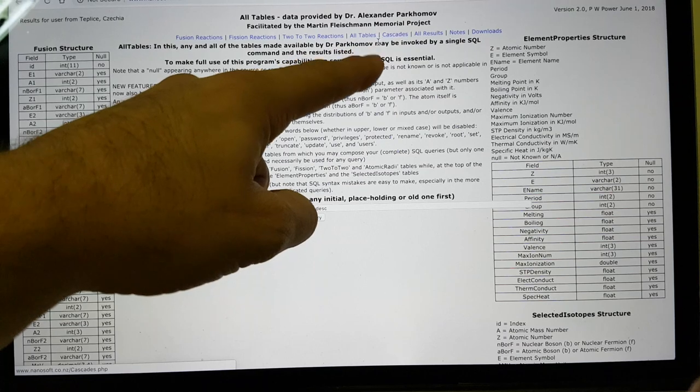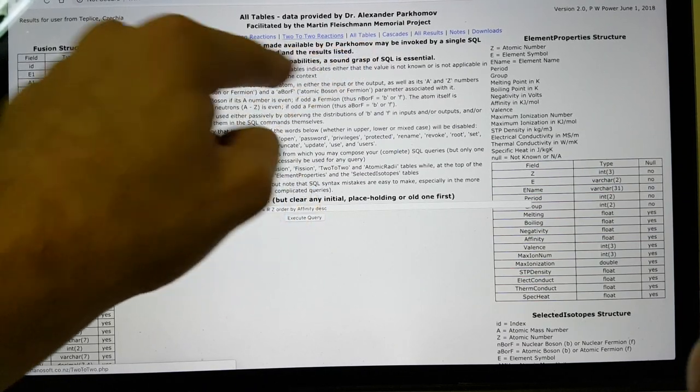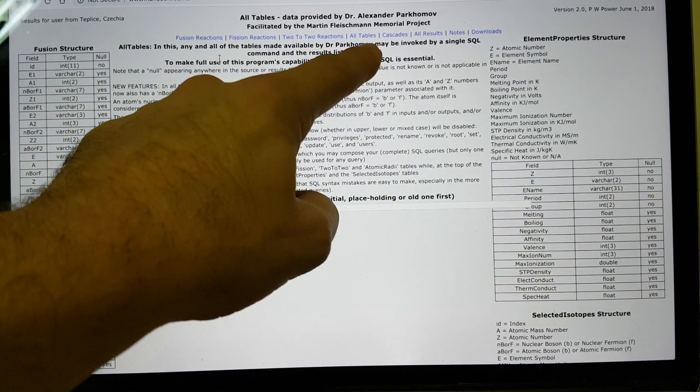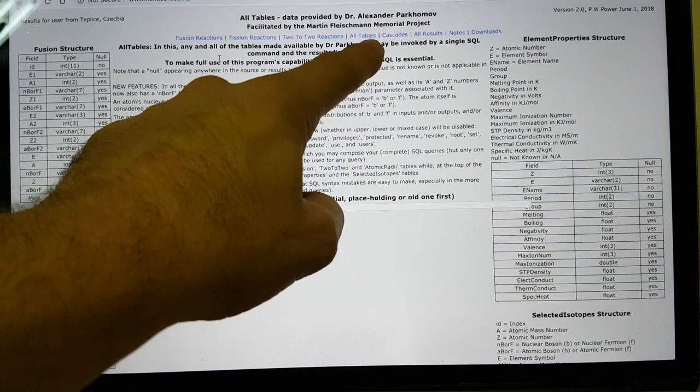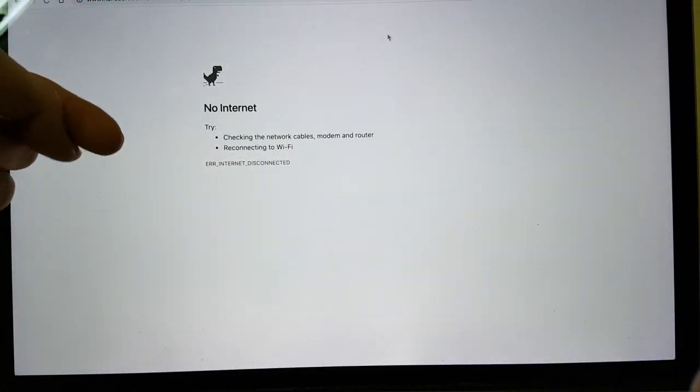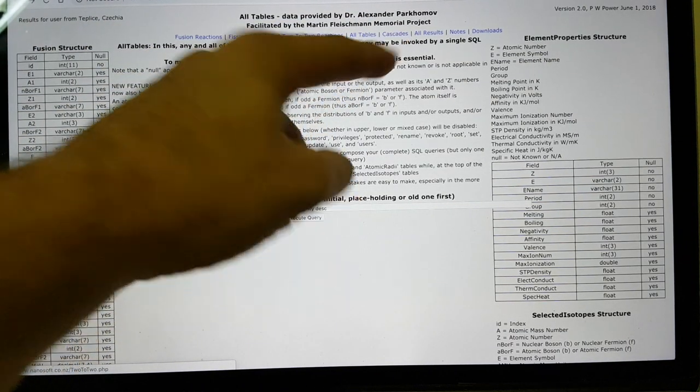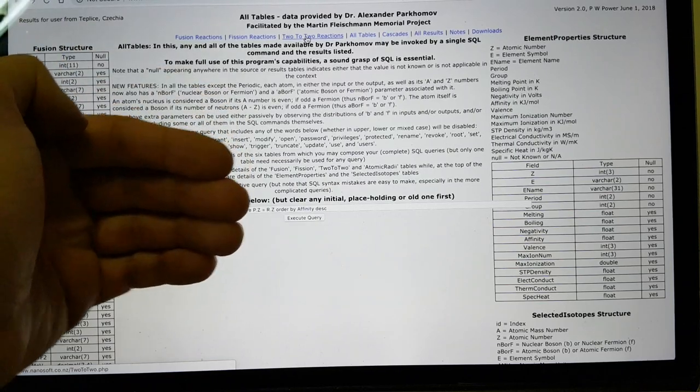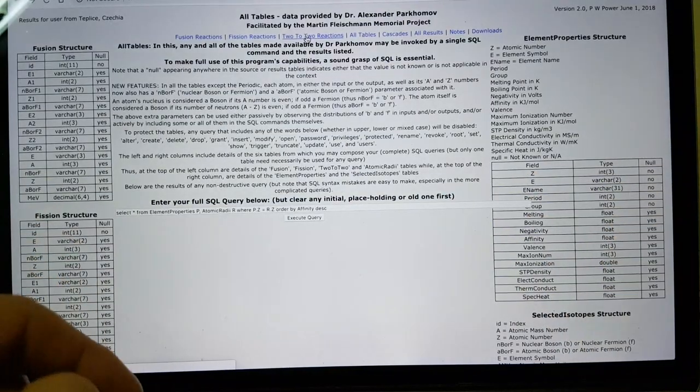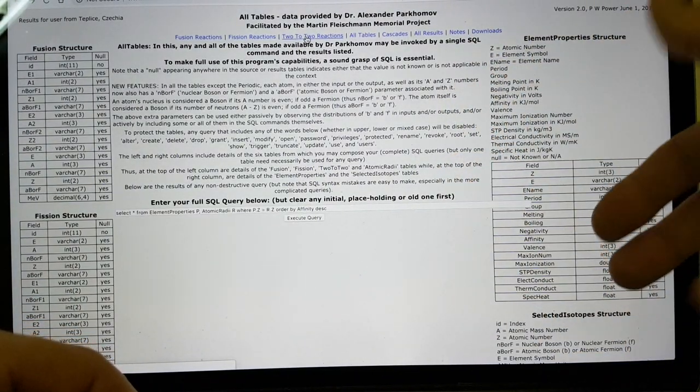These are all of the tables' reactions. You can either do just fusion reactions, just fission, or two-to-two, or you can look at all of the tables at once here, or you can do cascades. In cascades, it will actually run down saying, look, there's a product output, and those can then do a further reaction.